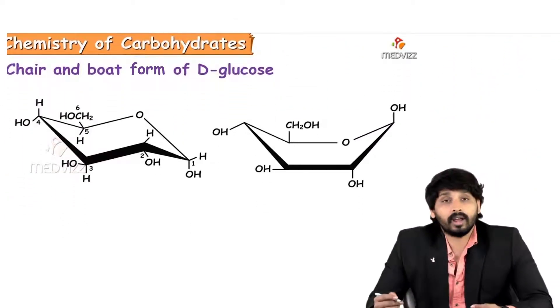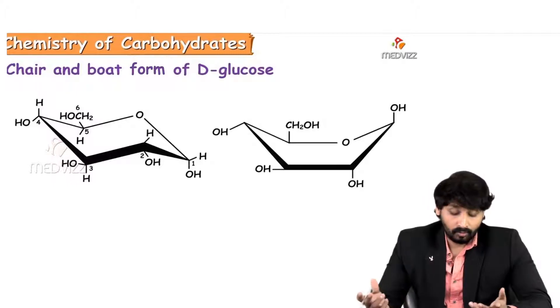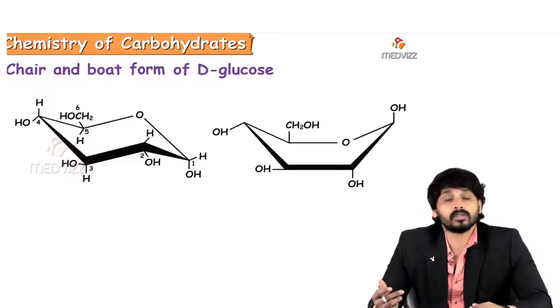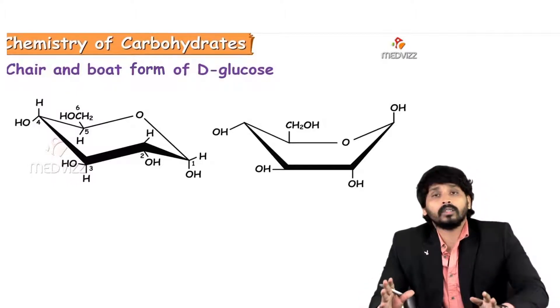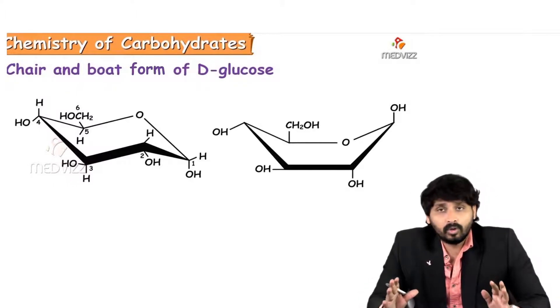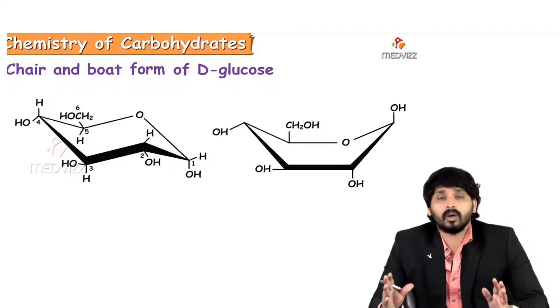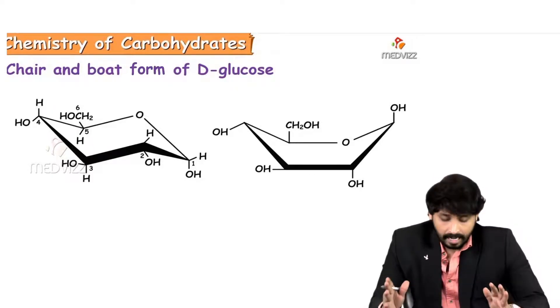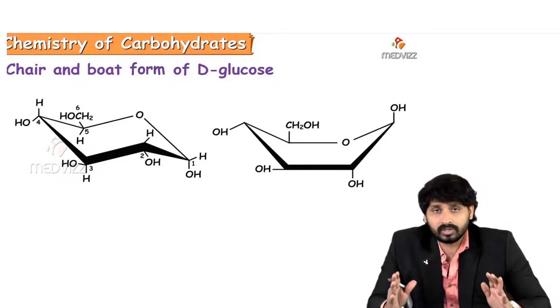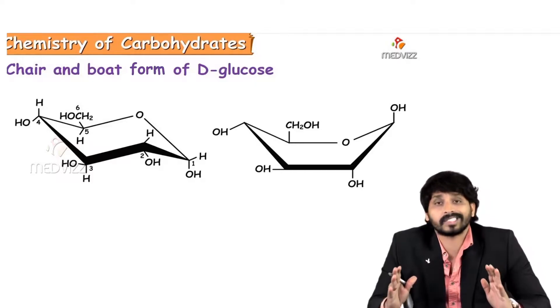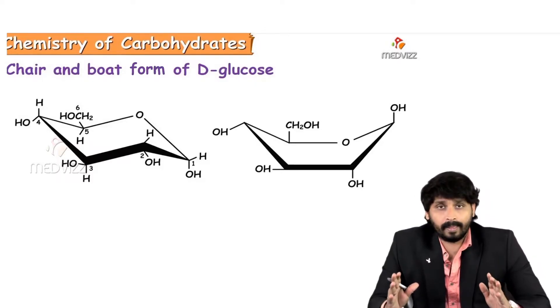Coming to the chair and boat forms of glucose, these are also structural forms of glucose. Compared to the boat form, the chair form of the structure is the more stable one.